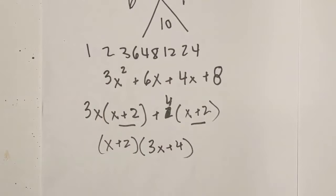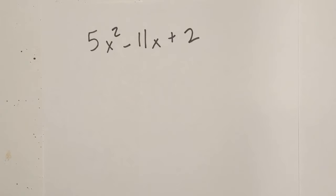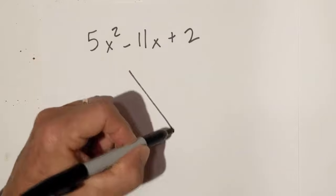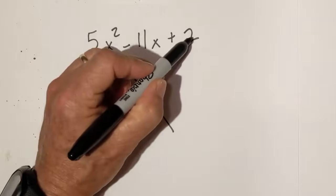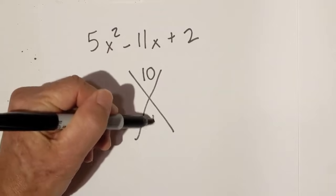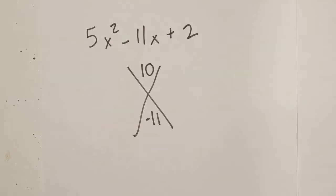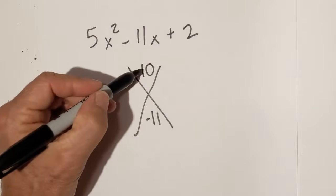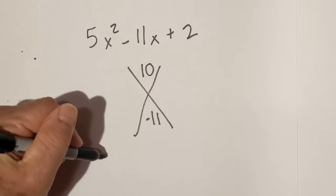Let's work another example. Let's go ahead and factor this out. Let's draw the X. 5 times 2 is 10. Bring down b, negative 11.